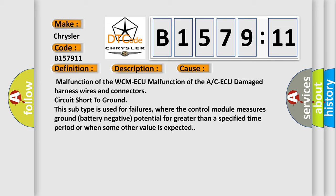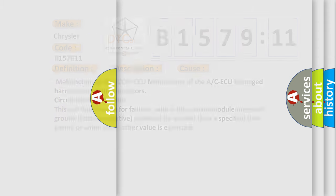This subtype is used for failures where the control module measures ground battery negative potential for greater than a specified time period or when some other value is expected.